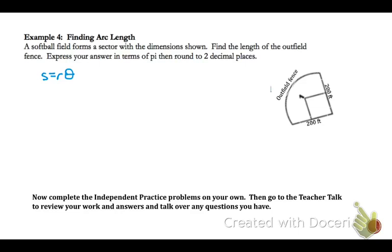Example 4: a softball field forms a sector. Find the length of the outfield fence — that's an arc length. The radius is 200 feet, and the angle is a right angle, which equals π/2 radians. Using S = Rθ: S = 200 × (π/2) = 100π feet. To approximate: 100 × π ≈ 314 feet.